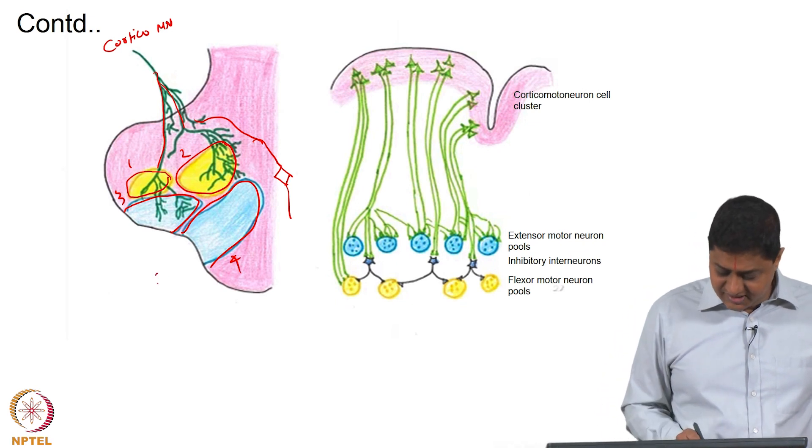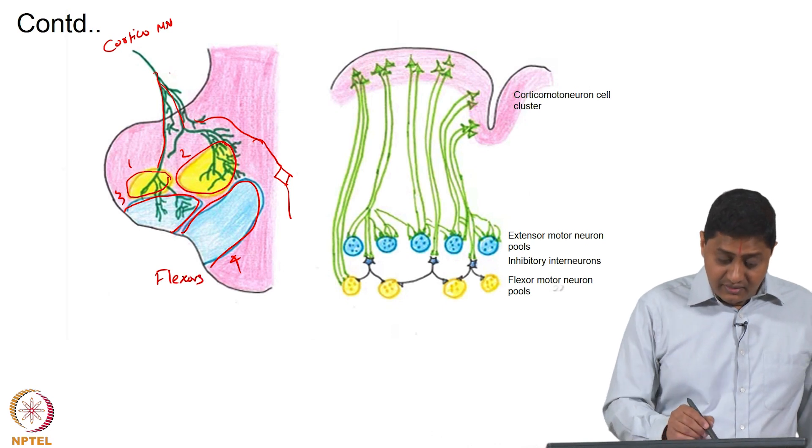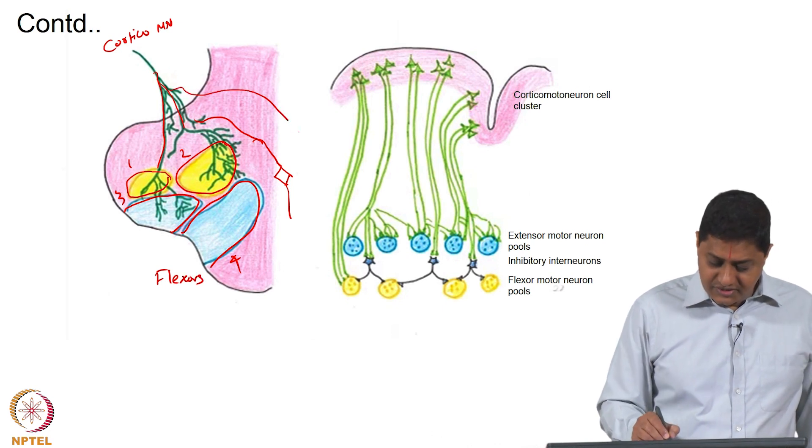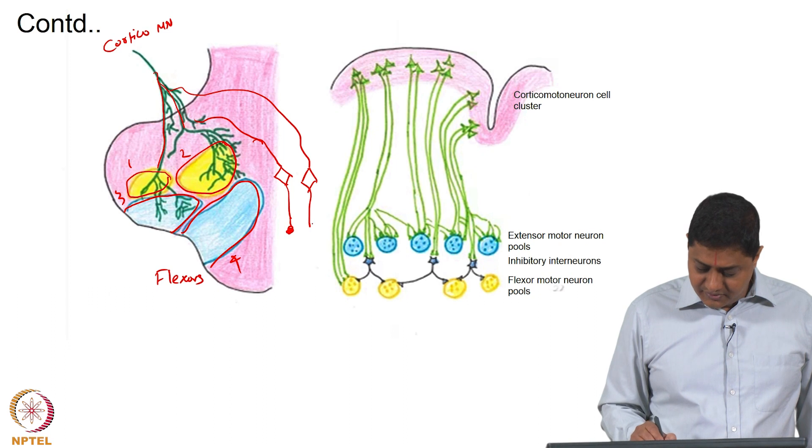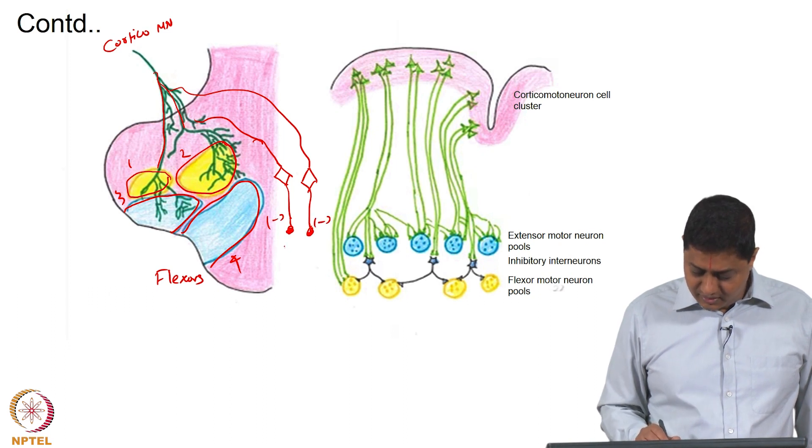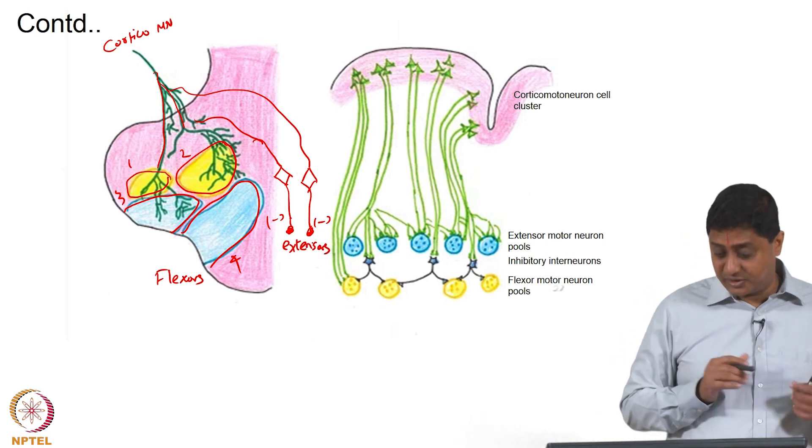I am going to call this muscle 1, 2, 3, and the 4th muscle. Let us assume that these 4 muscles are some flexors. The corticomotor neuron also innervates interneurons that inhibit or produce negative activity on the extensors, thereby releasing the extensors when the flexors want to flex.